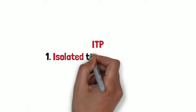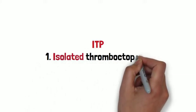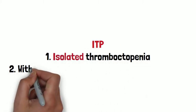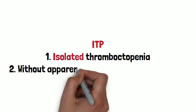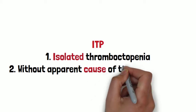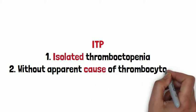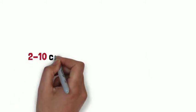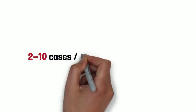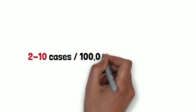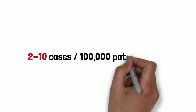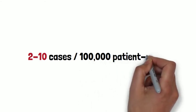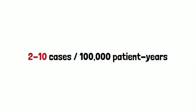ITP is defined as isolated thrombocytopenia without anemia or leukopenia and without another apparent cause. It is a relatively common cause of thrombocytopenia with an incidence of 2 to 10 cases per 100,000 patient years.